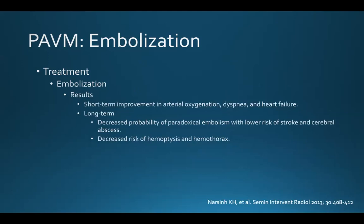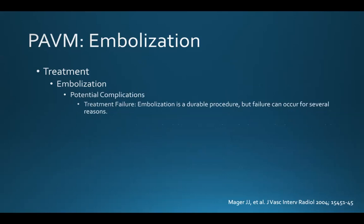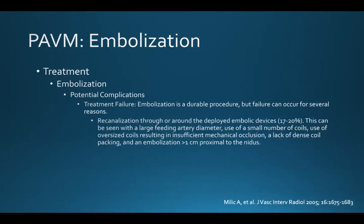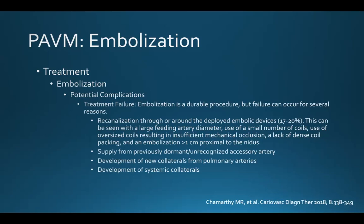The results of embolization are good. Short-term improvements in arterial oxygenation, shortness of breath, and heart failure have been reported. On a long-term basis, there's a decreased probability of paradoxical embolization with a lower risk of stroke and cerebral abscess, and a decreased risk of hemoptysis and hemothorax. Re-canalization has been reported as high as 17 to 20 percent. Causes include a large feeding artery diameter, use of a small number of coils, use of oversized coils resulting in insufficient mechanical occlusion, lack of dense coil packing, and embolization more than one centimeter proximal to the nidus. Other causes include supply from a previously dormant accessory artery, development of new collaterals from pulmonary arteries, and development of systemic collaterals.